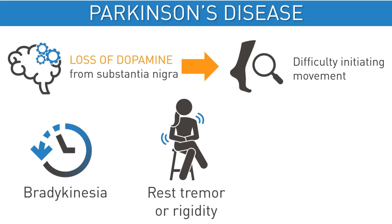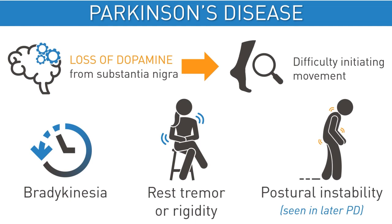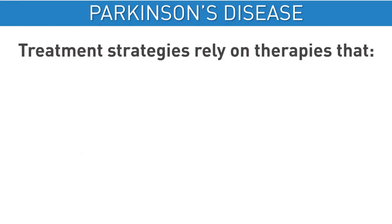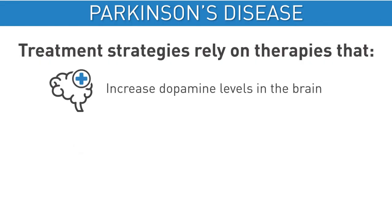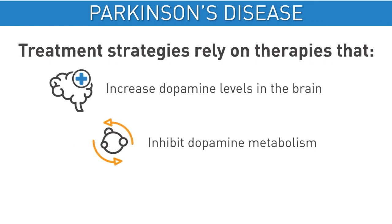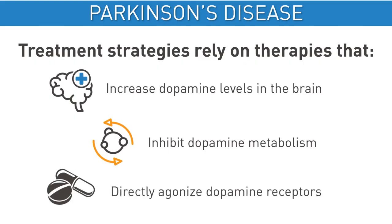Patients may also develop a shuffling gait consisting of reduced foot clearance when walking and decreased arm swing. Treatment strategies rely on therapies that increase dopamine levels in the brain, inhibit dopamine metabolism, and the use of direct dopamine receptor agonists.